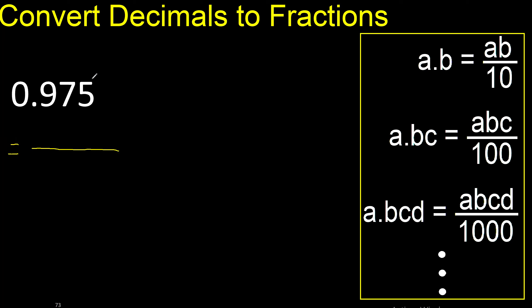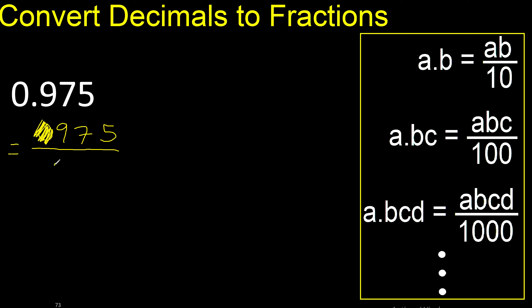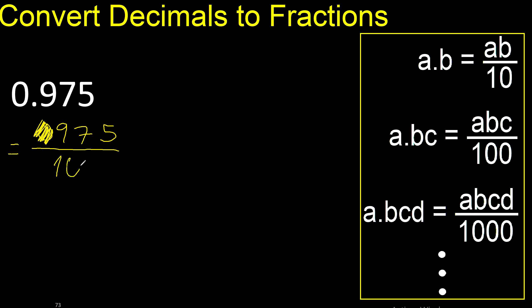First, all the numbers without point. Eliminate 0 on this side, always number 1. After the point there are 3 numbers, therefore 3 zeros: 1, 2, 3.